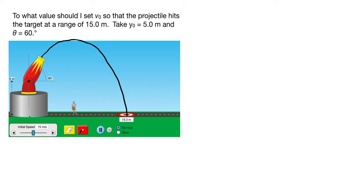We're going to pick our origin down here at the base of the cannon, and if I do that I have that the initial x position is equal to zero. My initial y position is the initial height, which is that 5 meters.